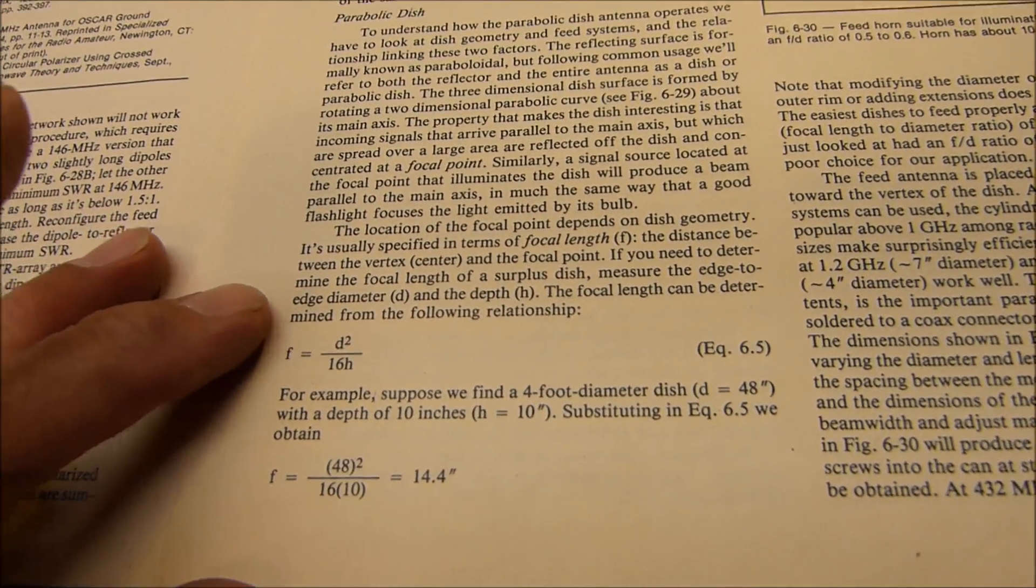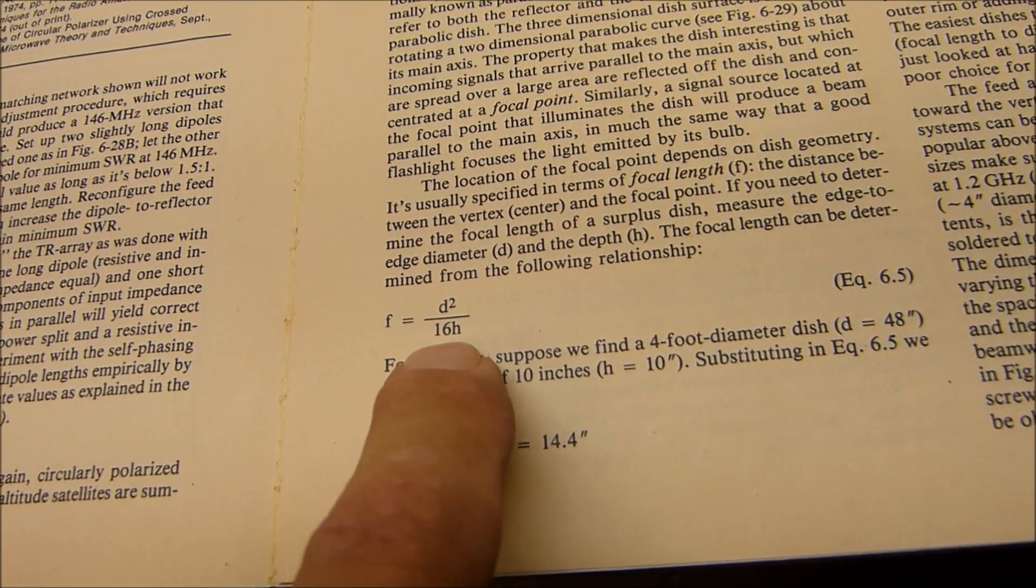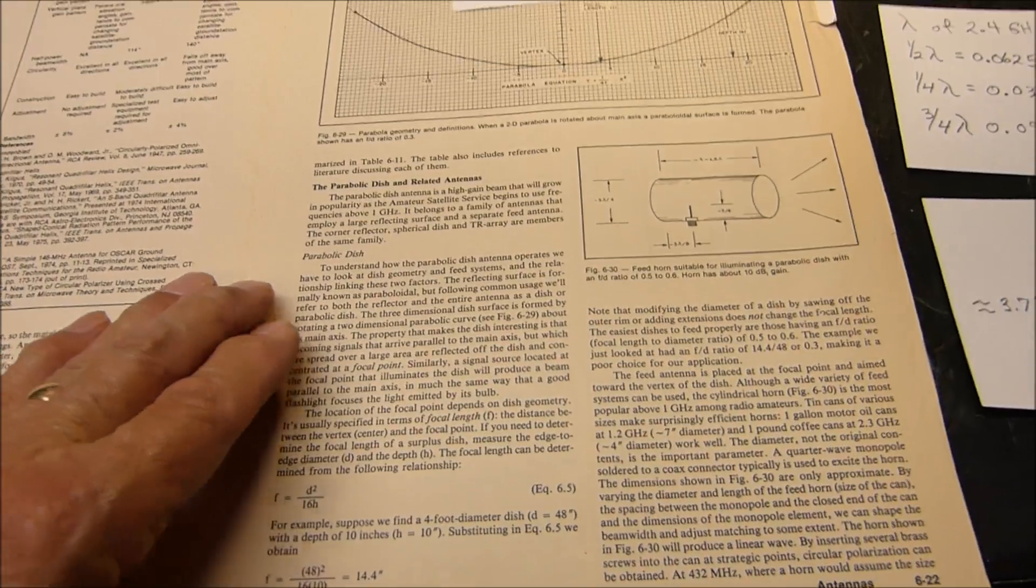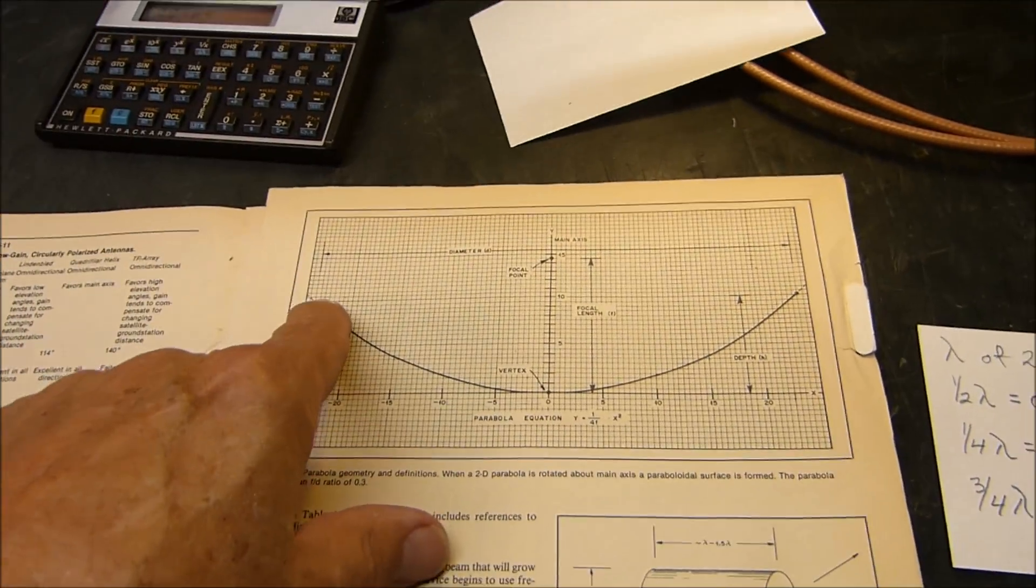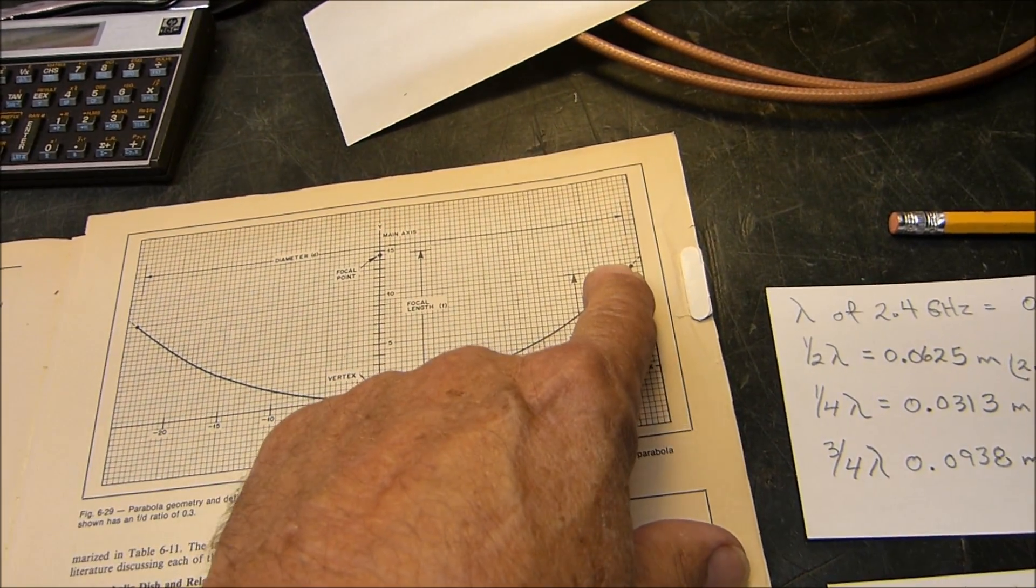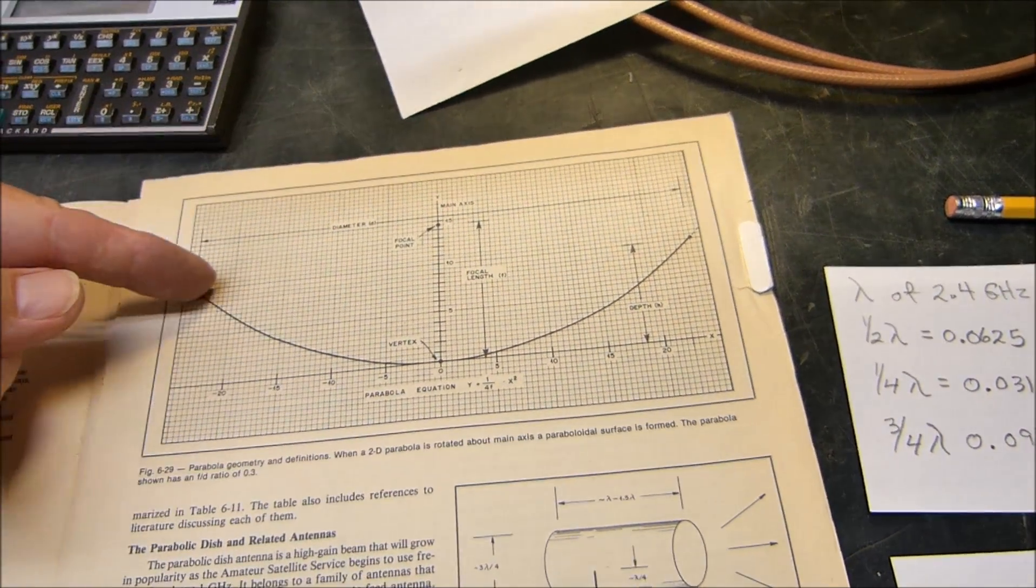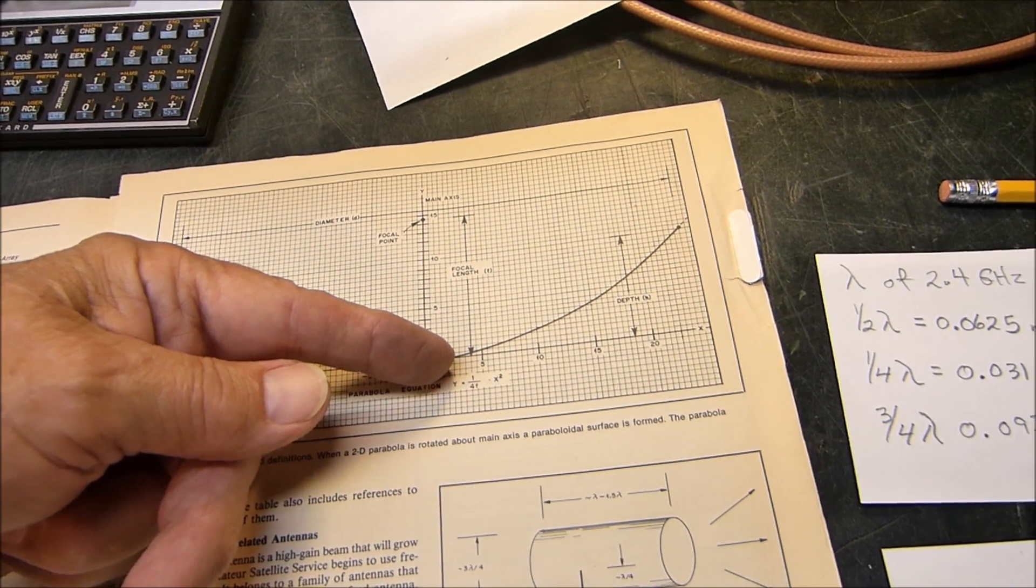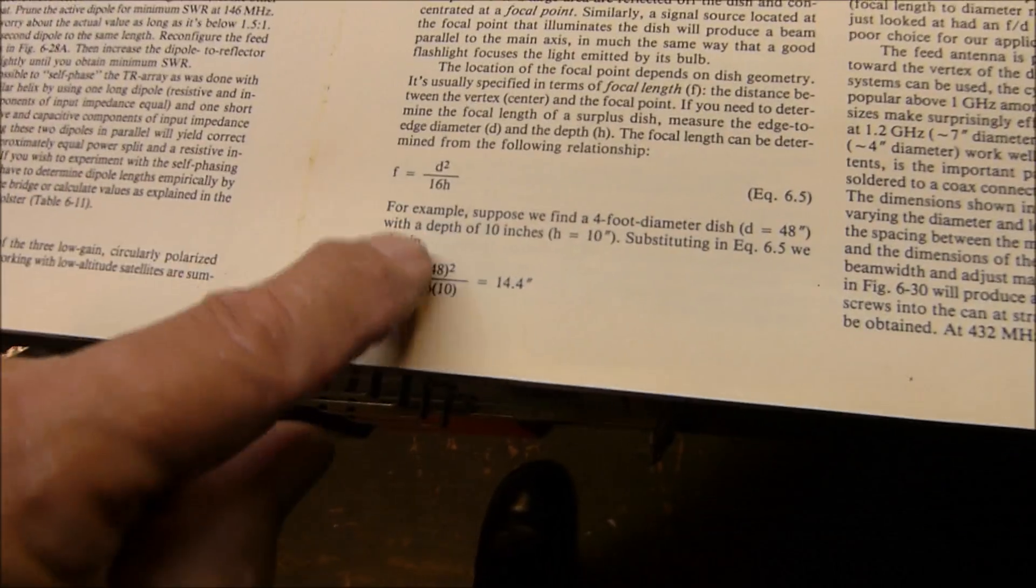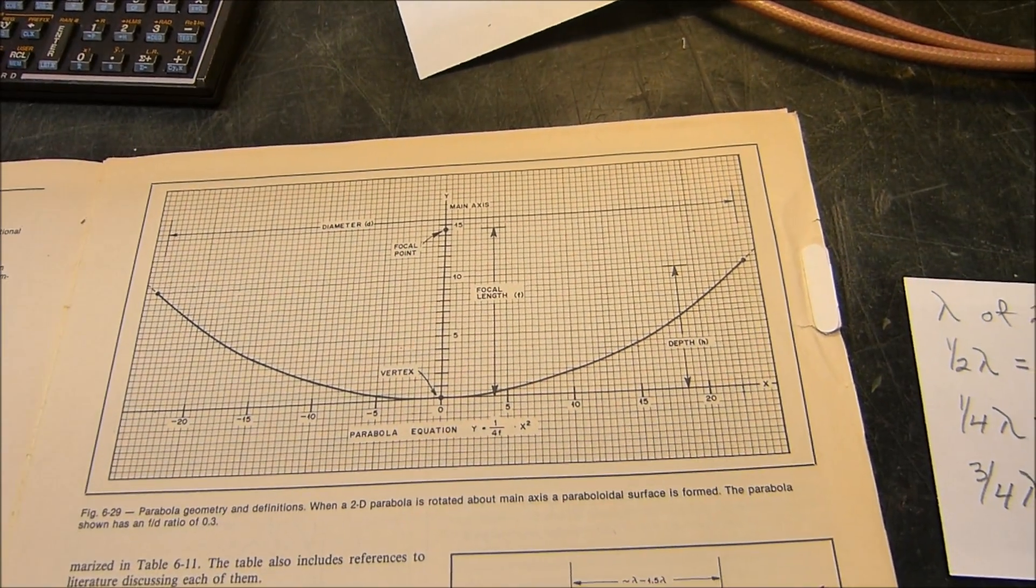You've seen these formulas before if you've watched any of my older videos. Here's how you determine the focal length. It's the diameter squared divided by 16H. This allows you to take the dish right here, and you measure it across. You measure its diameter from lip to lip. And then with a straight edge across it, you measure this depth from this horizontal line across it straight down to the center. So you've got two dimensions. And then you plug it into these little formulas here, and it tells you where the focal point is.